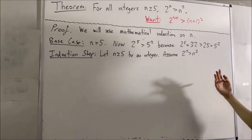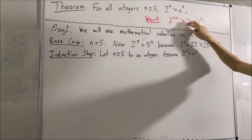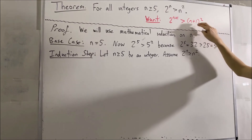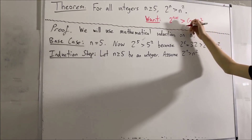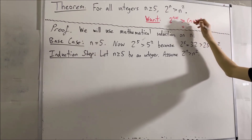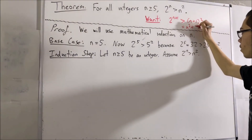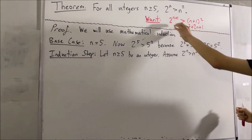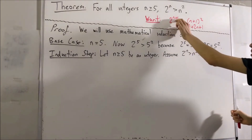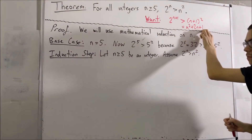It's going to be useful if we expand this parentheses out. If you expand this out, you get n squared plus 2n plus 1. So really, we're going to show that 2 to the n plus 1 is greater than n squared plus 2n plus 1.